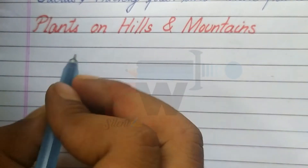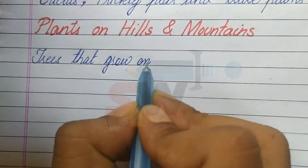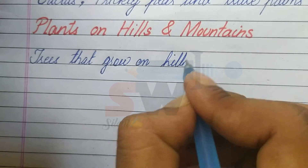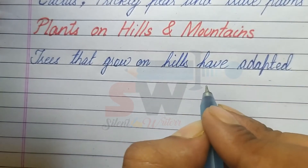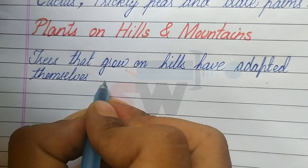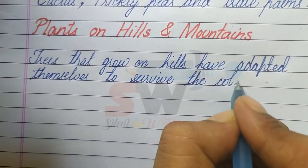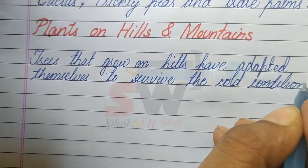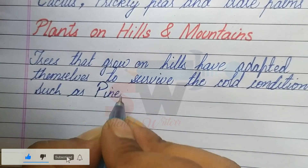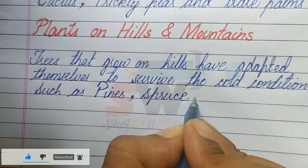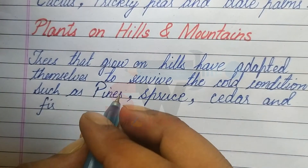Plants on Hills and Mountains: Trees that grow on Hills have adapted themselves to survive the cold conditions. Such as Pines, Spruce, Cedar, and Fir.